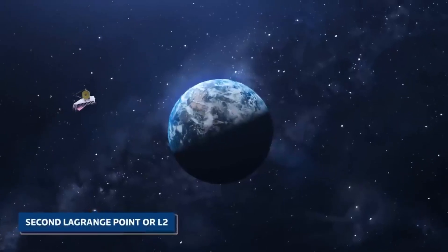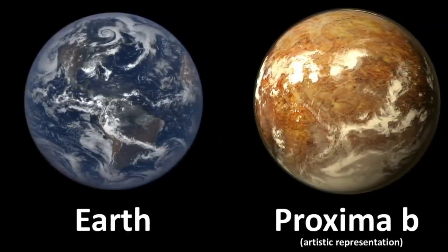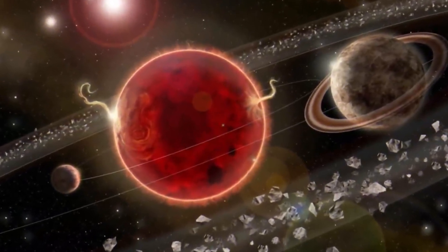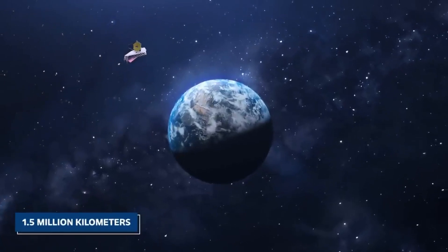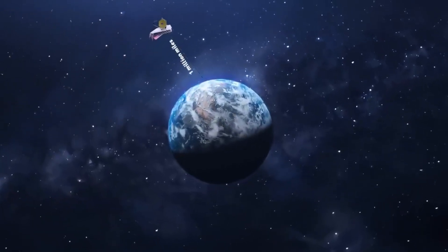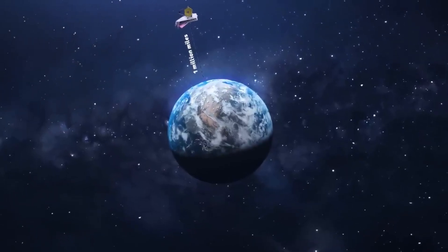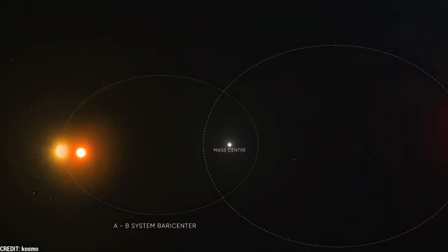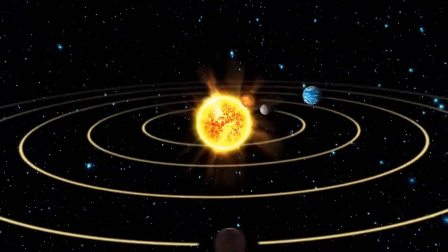Exoplanets, planets beyond our solar system, have been a subject of intense study since their first official discovery in 1992, when scientists identified planets orbiting pulsars. Subsequent breakthroughs, including the detection of planets orbiting stars similar to our Sun, have expanded our understanding of the cosmos exponentially. With thousands of exoplanets already catalogued, including several Earth-sized candidates within their stars' habitable zones, the prospects for finding worlds capable of supporting life appear increasingly promising.